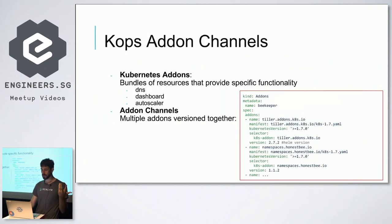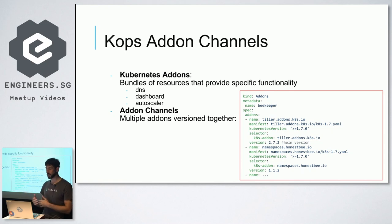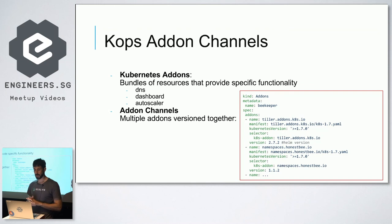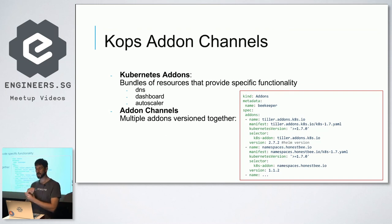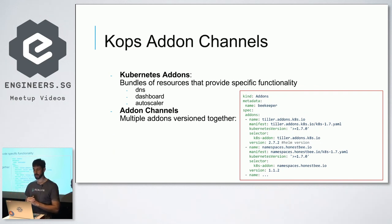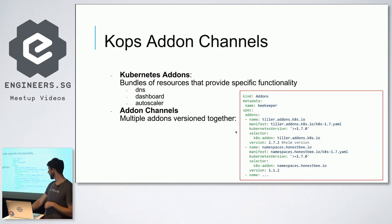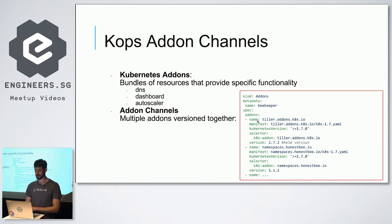The kubelet then starts the container runtime — Docker or something else — with that allocated CIDR subnet. Kubelet then handles and reports the rest, playing the normal role of node agent. That covers the two parts of KOPS: creating cloud resources and provisioning nodes to join the cluster. Finally, how do we manage add-ons on top of Kubernetes — installing DNS, dashboard, autoscaler configuration? KOPS comes with embedded components called channels.